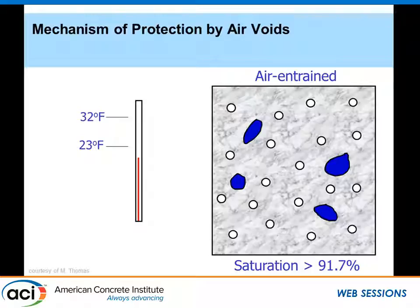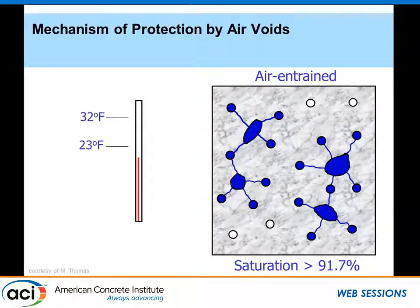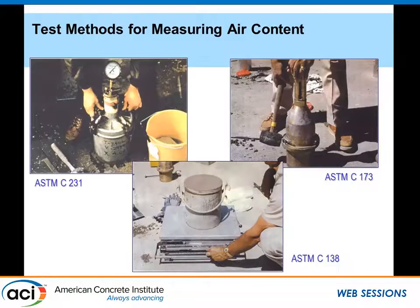When a critically saturated system begins to undergo freezing and the temperature drops, the freezing water now has an outlet — it can migrate to the air bubbles. By doing so, it doesn't exert stresses within the concrete matrix. The concrete can now undergo repeated cycles of freezing and thawing without developing stresses that would cause a problem. This is the mechanism by which entrained air provides freeze-thaw protection.